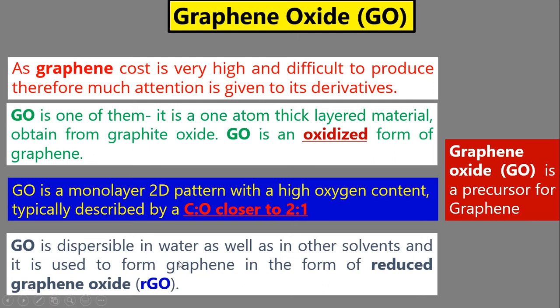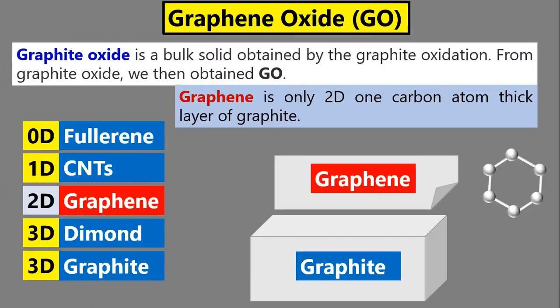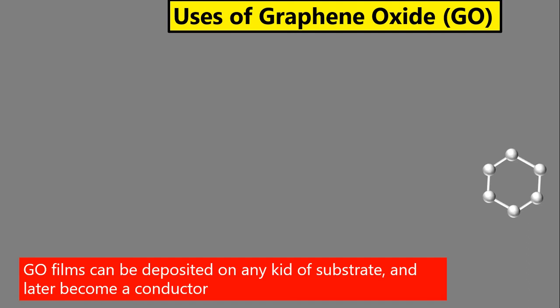A key benefit of graphene oxide is that it is dispersible in water and other solvents such as DMF and ethanol, which is important for solution-based processing on various substrates. However, as mentioned, graphene oxide is an insulator, not a conductor. For electrode applications we need a conducting substrate or film, so we further reduce graphene oxide into reduced graphene oxide (rGO) using techniques such as CVD, chemical reduction, thermal reduction, or lithography.